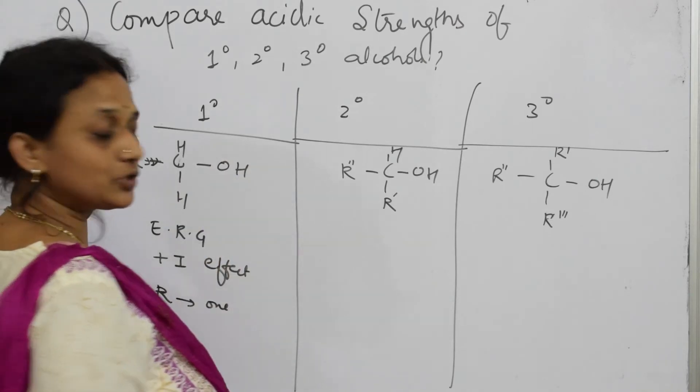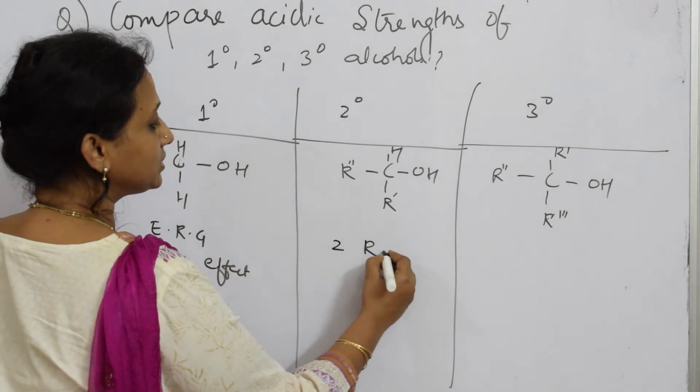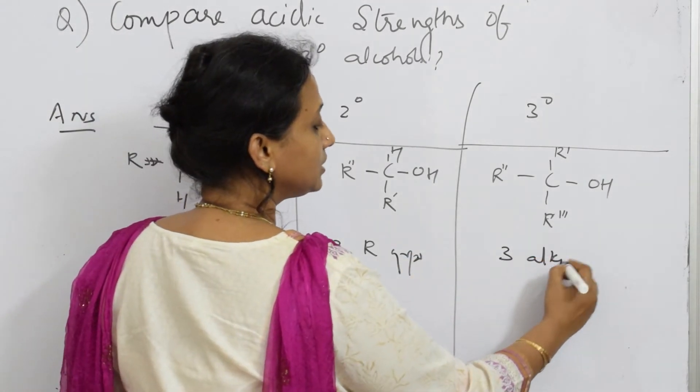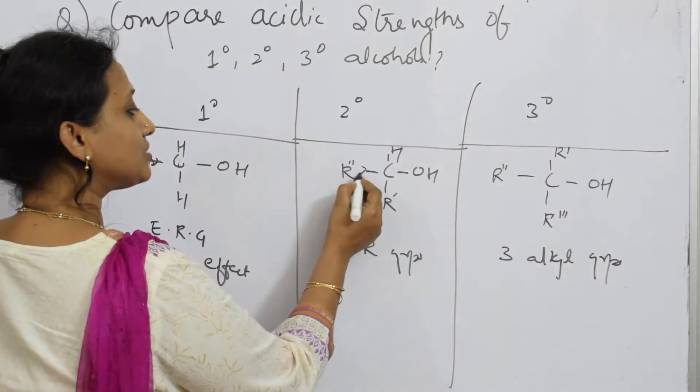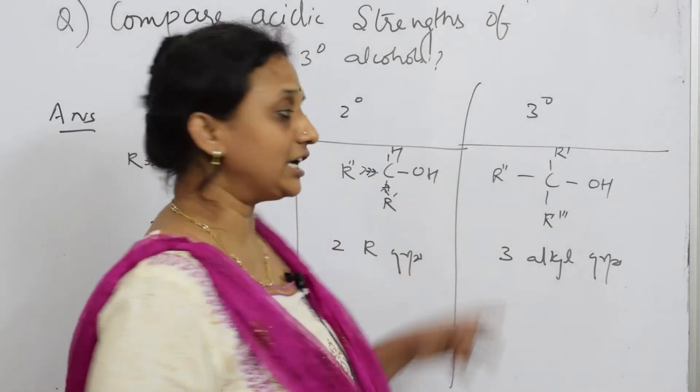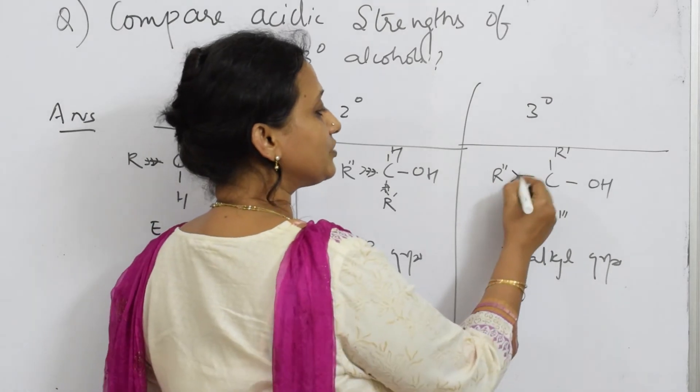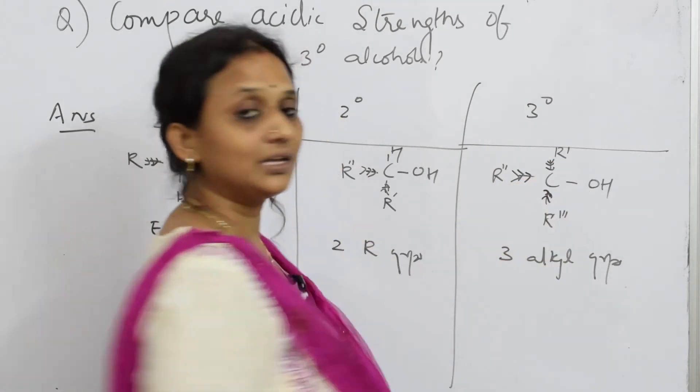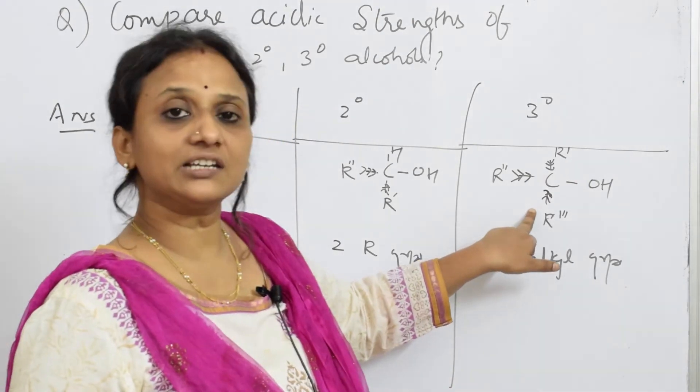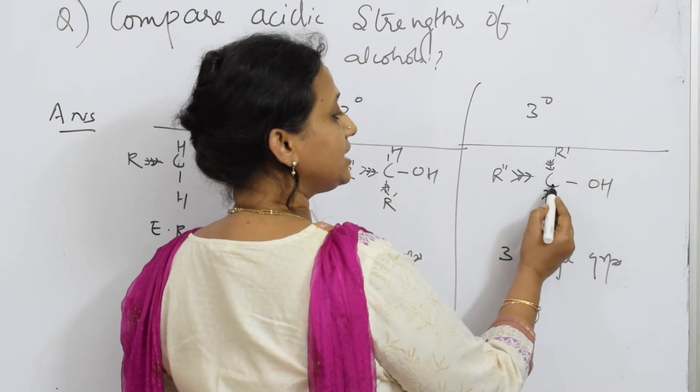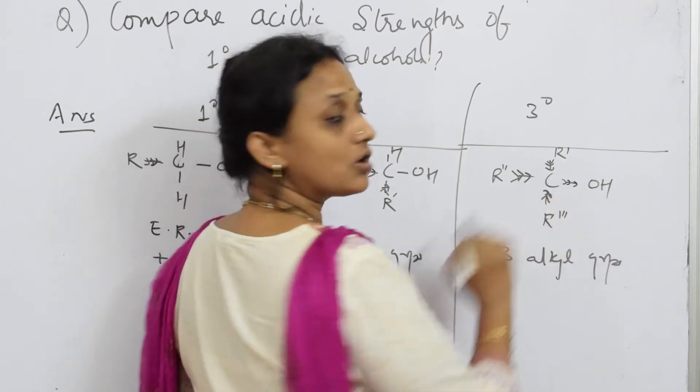Here, how many alkyl groups do you have? You have two alkyl groups. Here, how many do you have? You have three alkyl groups. So what happens is, here also this is donating, this is also donating. But when it comes to tertiary alcohol, you have three alkyl groups which are continuously donating electrons or releasing electrons towards carbon. Now, when something is releasing electrons around carbon, so what happens to carbon? This whole electron density is further pushed onto oxygen.